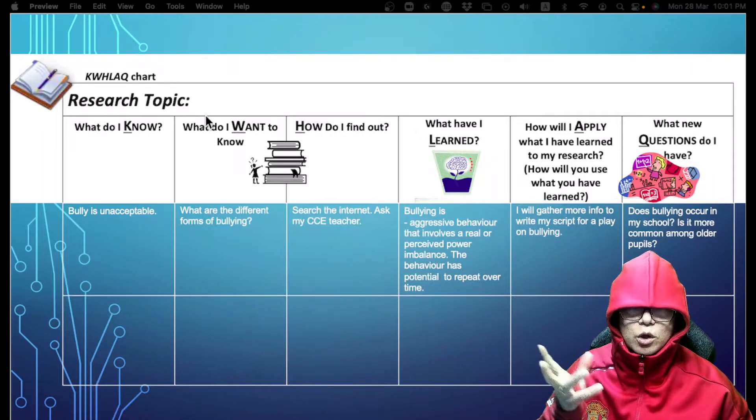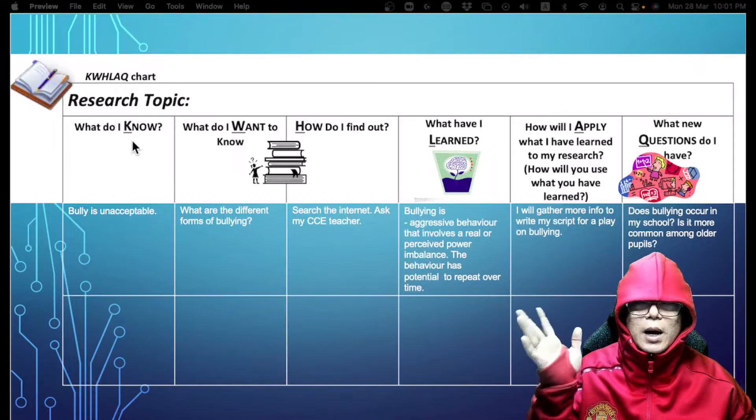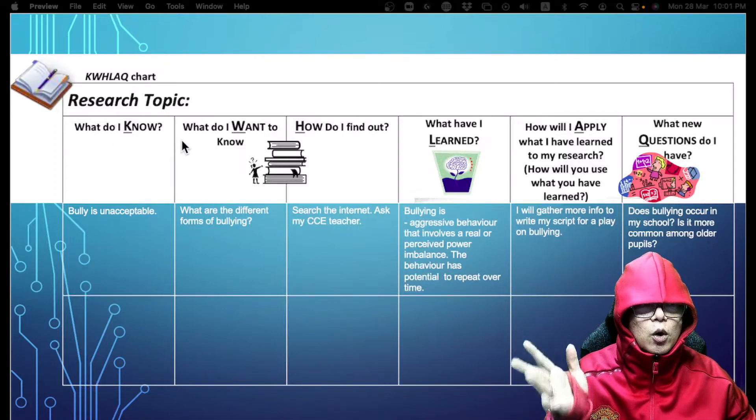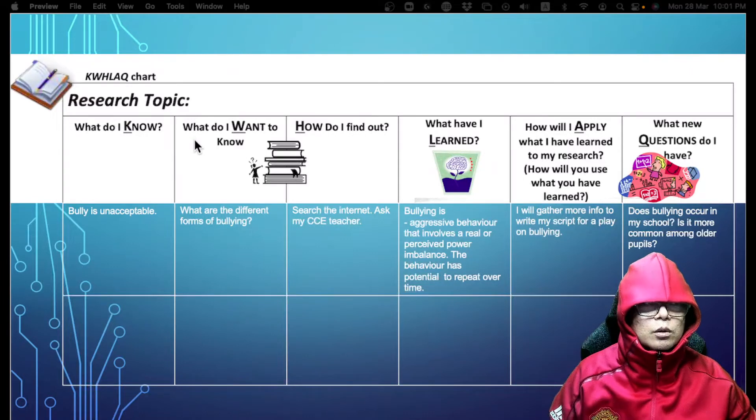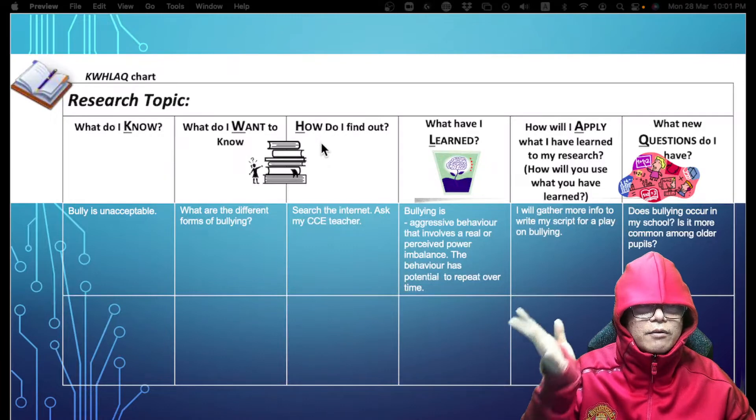K stands for what do I know, and W stands for what I want to know, and H stands for how do I want to find out all this information that I want to know.